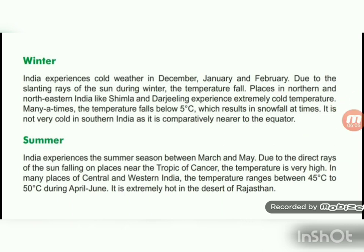India experiences the summer season between March and May. Due to the direct rays of the sun falling on places near the Tropic of Cancer, the temperature is very high. In many places of central and western India, the temperature ranges between 45 to 50 degrees Celsius during April and June. It is extremely hot in the desert of Rajasthan.